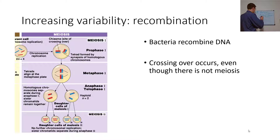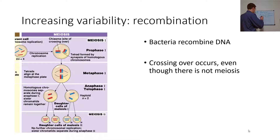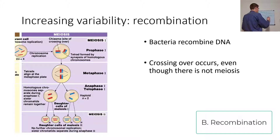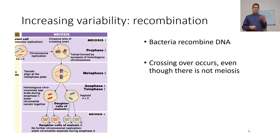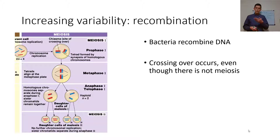Let's see how bacteria increase their variability. First, there's recombination. Bacteria, even though they only have one circular chromosome and there isn't really meiosis, they still recombine their DNA — they swap out portions of their genome. If successful, they get new alleles and perhaps even new genes, including some that may confer resistance, such as recombination between a bacterial genome and various plasmids.